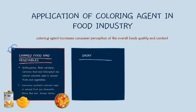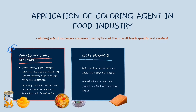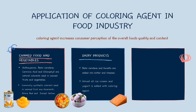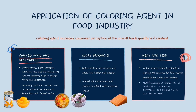Coloring agents are also used in dairy products — beta-carotene and annatto are added into butter and cheeses, and almost all ice cream and yogurt is added with coloring agents. Last but not least, they are applied in meat and fish products — water-soluble colorants suitable for pickling are required for fish products produced by curing and smoking, and mixtures of carmoisine, tartrazine, and sunset yellow can also be used.